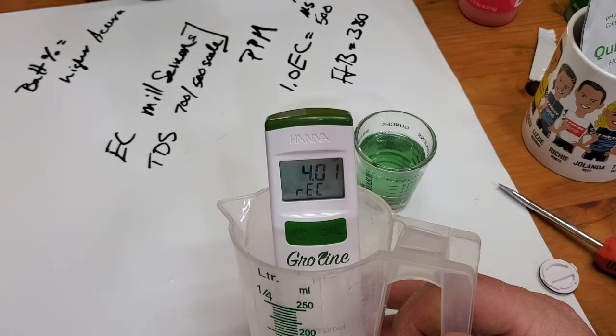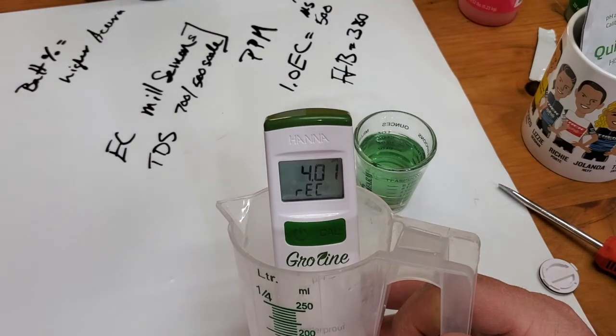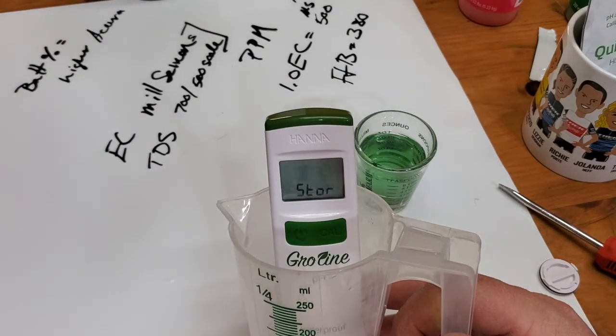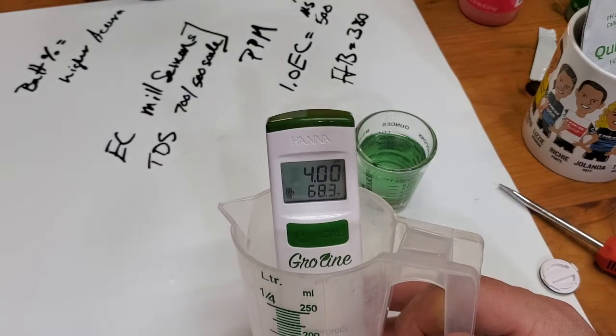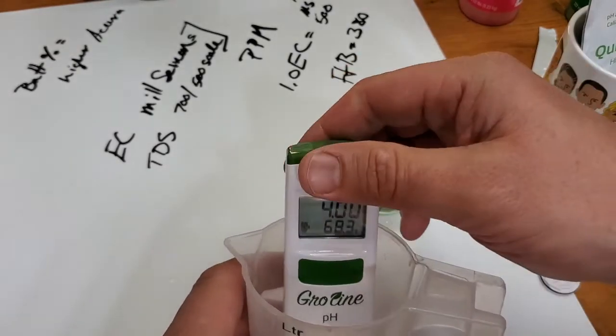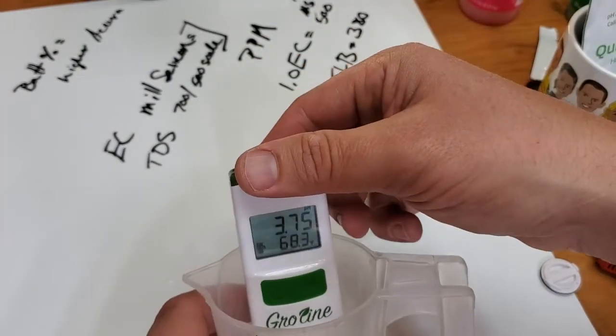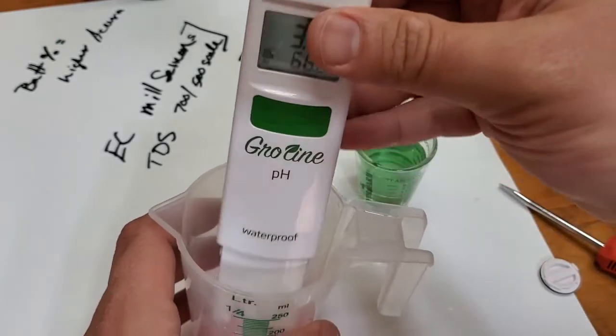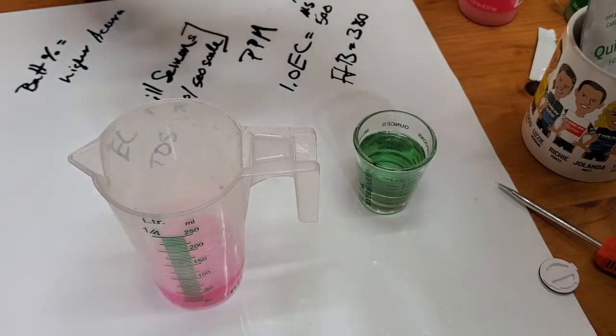Once it times out, it'll be done. It should go back to the main screen. Now it's calibrated. So if you don't have the Quick Cal solution on hand, that's how you do a standard calibration.